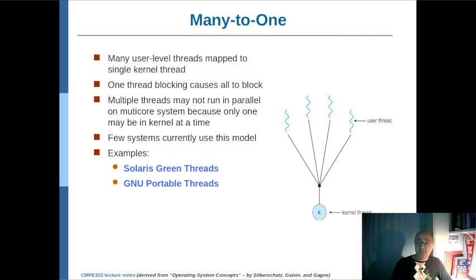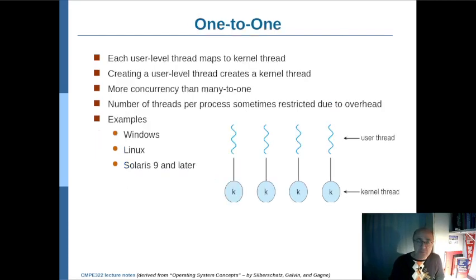If this gets blocked, the kernel thread here gets blocked. Therefore, the remaining threads cannot proceed either. This does not provide parallelism, independent of how many cores you have in your system. Therefore, there are very few systems that currently use this model, so we will not be focusing on that one.